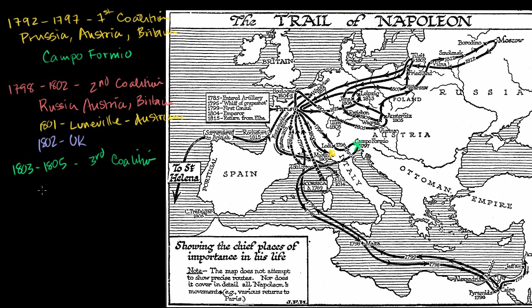In the Third Coalition, the players were the United Kingdom of Great Britain and Ireland, Russia, and Austria — though there were other players like Portugal. We'll see that the War of the Third Coalition really ended with Napoleon being the dominant power in Europe.